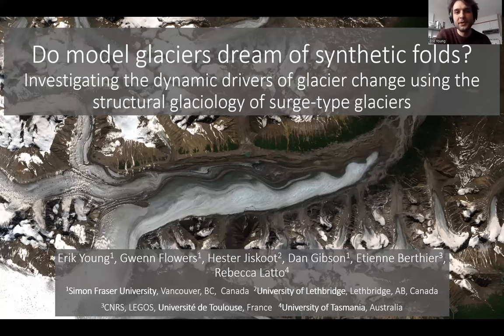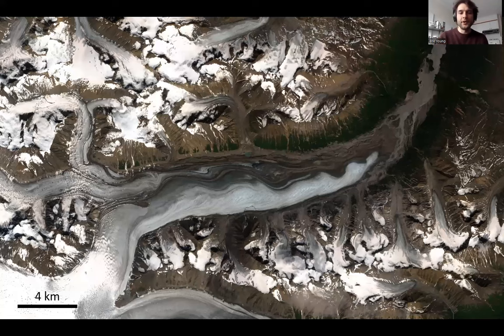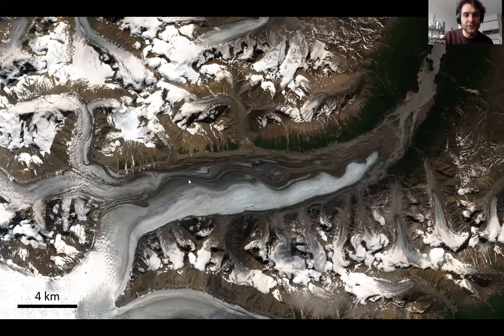As the title suggests, I'll be talking about work I've been doing for my PhD, which is looking at the dynamics of glaciers through the lens of folding in surge-type glaciers. I want to draw your attention to this title slide — this is the Dusty Glacier, a large surge-type glacier located just east of the Yukon-Alaska border in the St. Elias Mountains. I want to highlight this beautiful series of folds present on the surface, highlighted by sediment deposited onto the ice's surface.